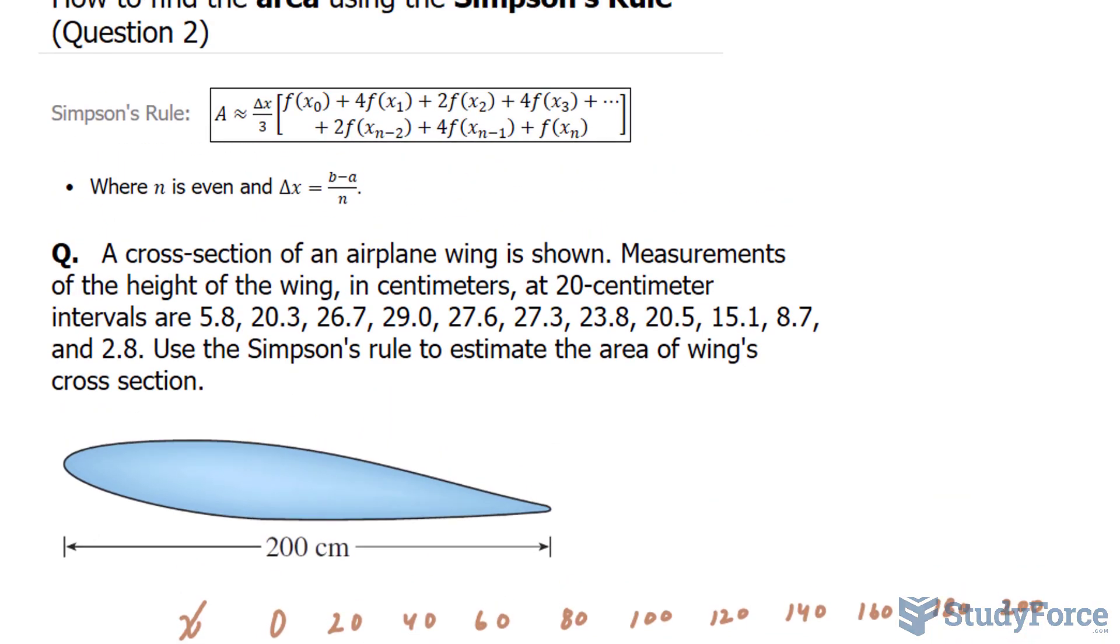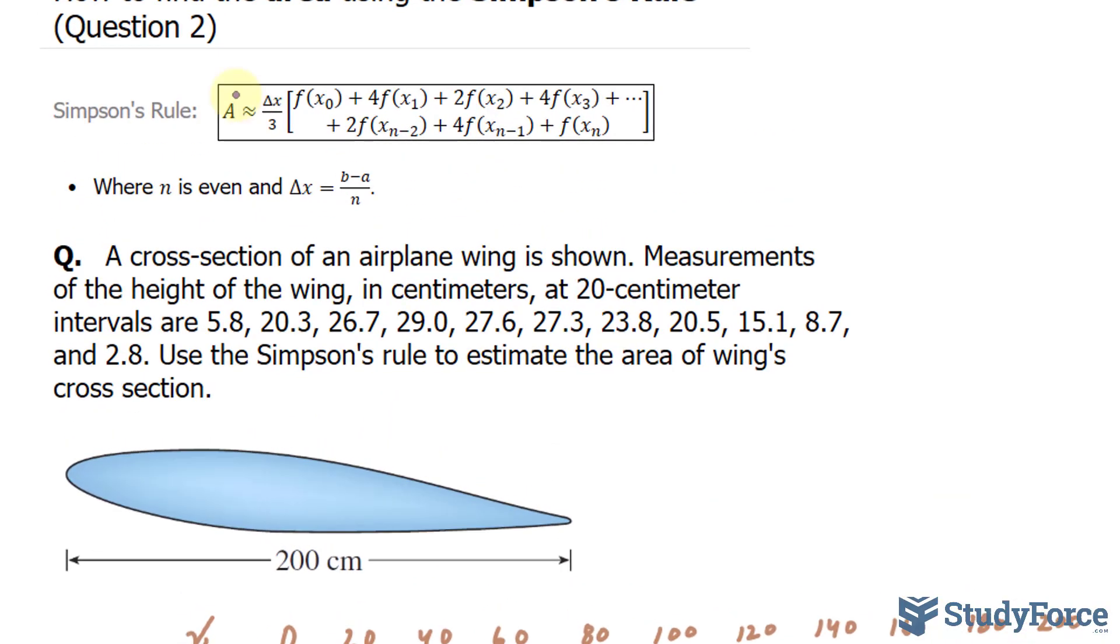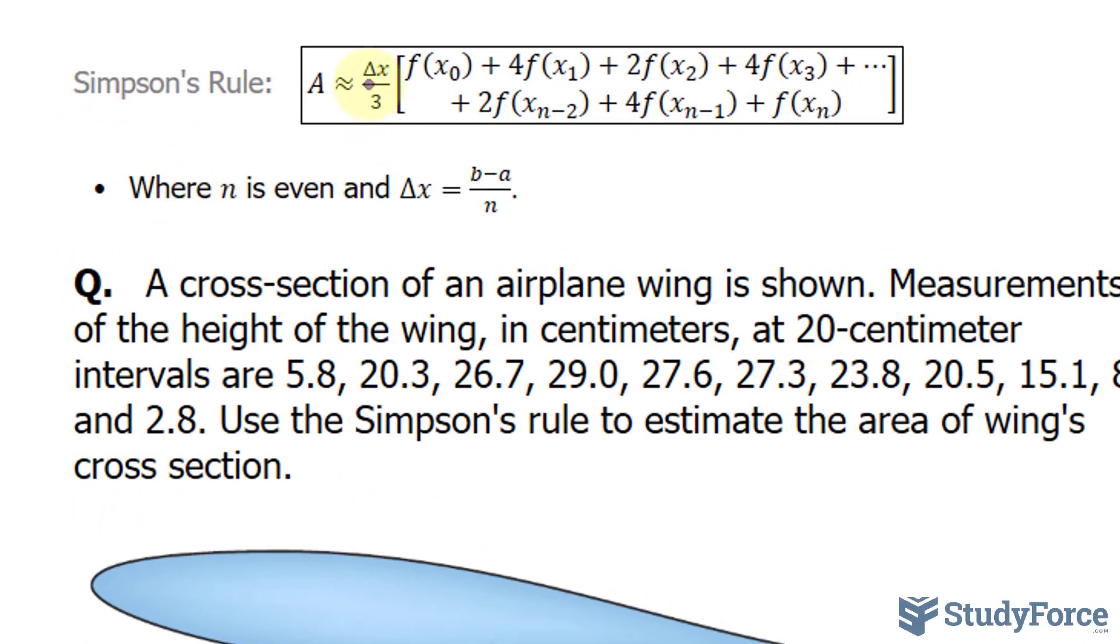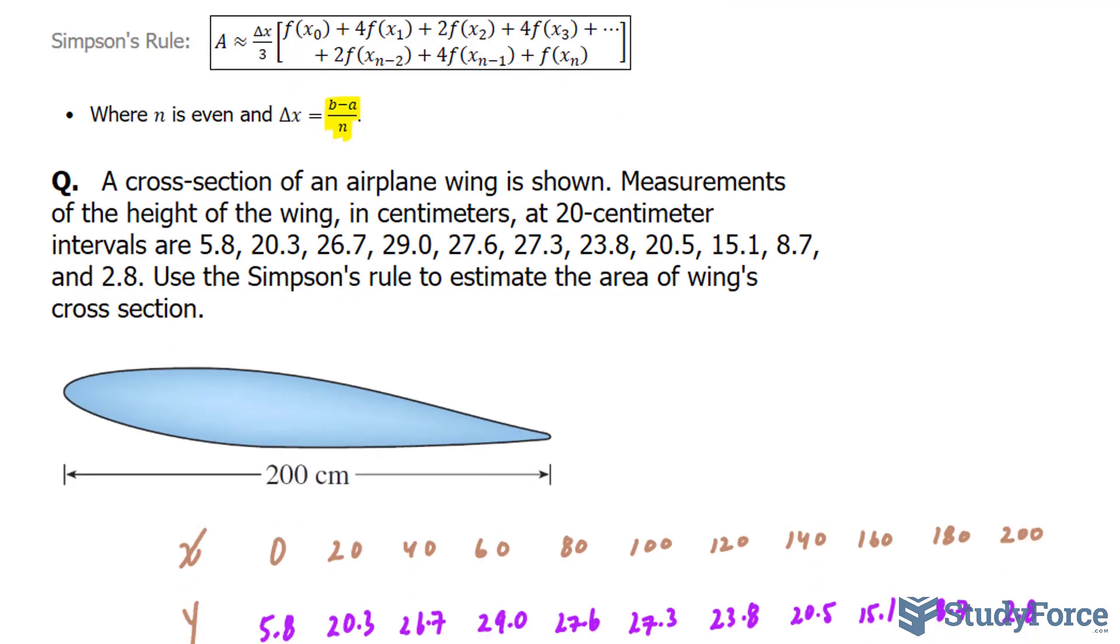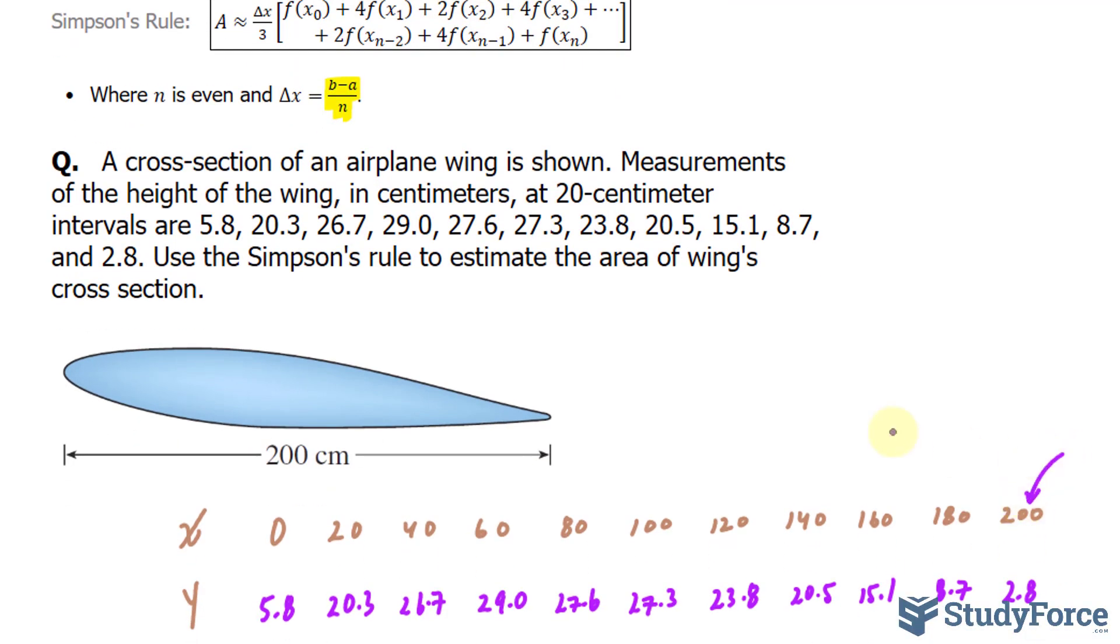Let's take a look at the formula for Simpson's rule. We're told that the area, which is an approximation, is equal to delta X over 3. Let's discuss that. Delta X is calculated by taking B minus A over N. B and A represent the endpoints at the two extremes. So for us, B will be 200 and A will be 0.